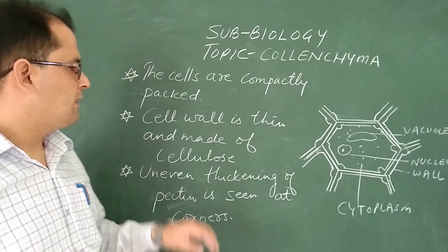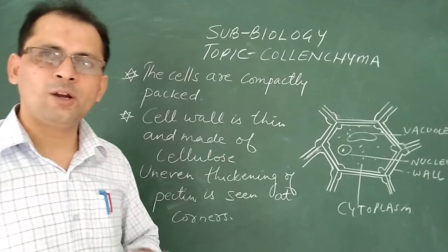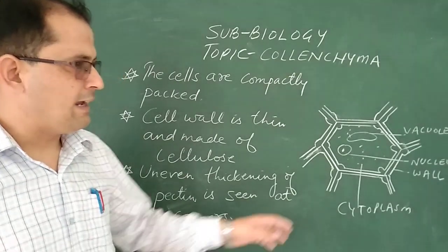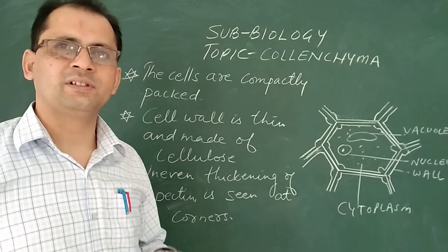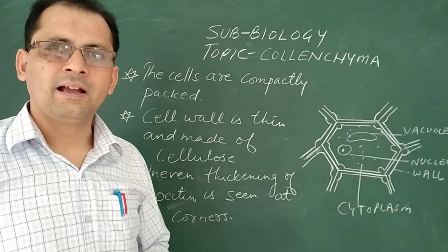Cell wall is thin and is made up of cellulose. So like this is the cell wall and in this cell wall the chemical which is present is cellulose.